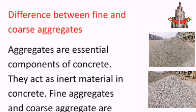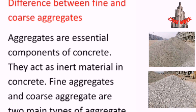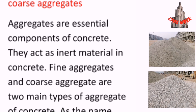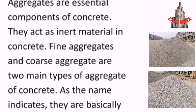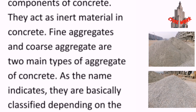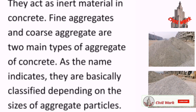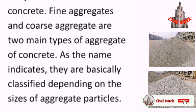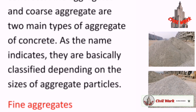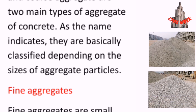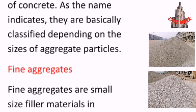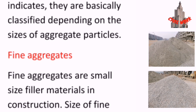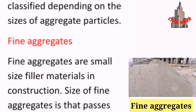The difference between fine and coarse aggregates. Aggregates are essential components of concrete. They act as inert material in concrete. Fine aggregates and coarse aggregates are two main types of aggregate in concrete. They are basically classified depending on the size of aggregate particles.